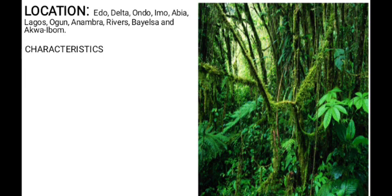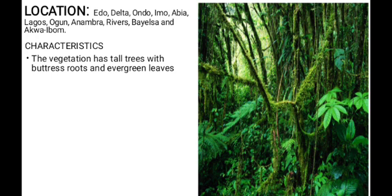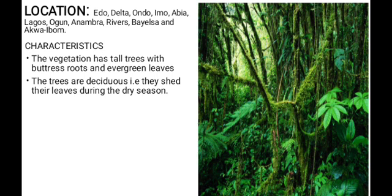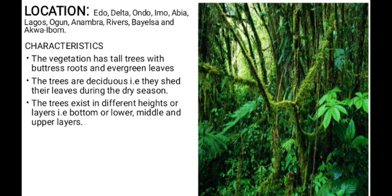The characteristics of this vegetation include tall trees with buttress roots and evergreen leaves. The trees here are also deciduous — they shed their leaves during the dry season and grow them back during the rainy season. The trees exist in different heights or layers: the bottom or lower layer, the middle layer, and the upper layer, also called the emergent trees. Trees in this biome exist in up to five layers, and the biome also has tall grasses.